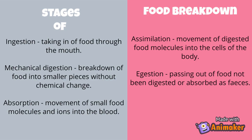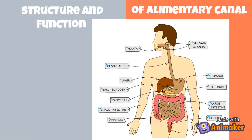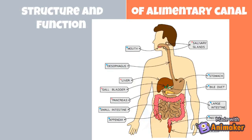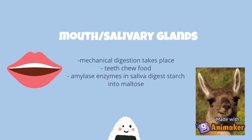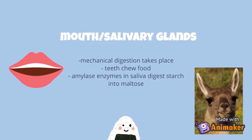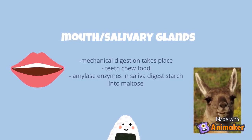Egestion is the passing out of food not being digested or absorbed as feces. This is the structure and function of the alimentary canal. First is the mouth with the salivary glands — mechanical digestion takes place here and the teeth chew food.